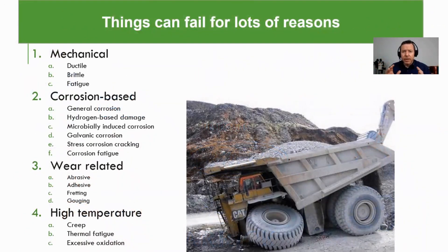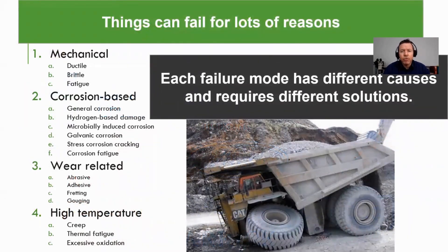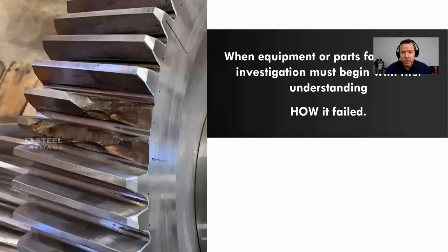Everyone here intuitively understands that things can fail for a variety of reasons. Each of these reasons — what we'll call failure modes — occur for very different reasons and require very different solutions. Obviously what causes fatigue, brittle fracture, or one of the many corrosion-based mechanisms is going to be very different. How you would investigate fatigue, brittle, or corrosion-based failures is very different. And the solutions you would apply to ensure no other parts fail in the same way are all going to be incredibly different. Which is why, when doing an RCA or any reputable investigation, we have to begin with understanding how the part failed.